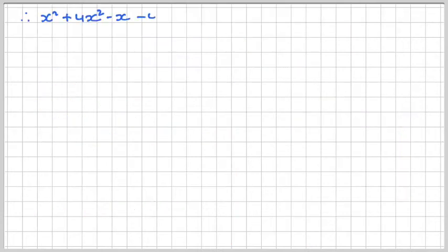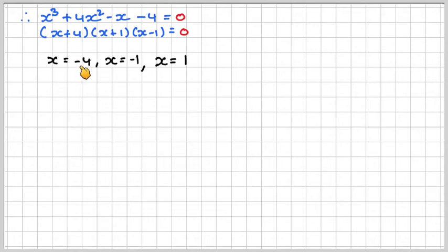Therefore, x cubed plus 4x squared minus x minus 4, we're trying to find where it cuts the axis. Factorizing gives us this. Therefore, we know that x is minus 4, x is minus 1, and x equals 1.